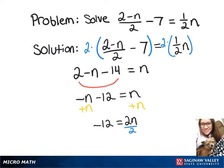Lastly, we're going to divide by that 2, which gives us a solution of -6 = n.